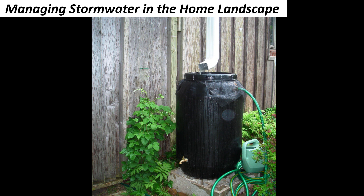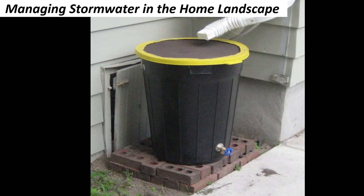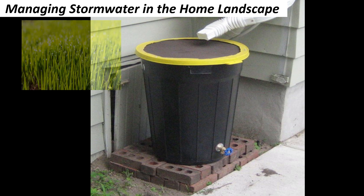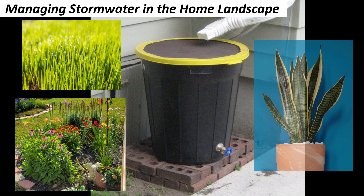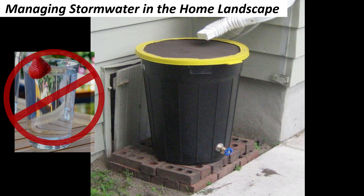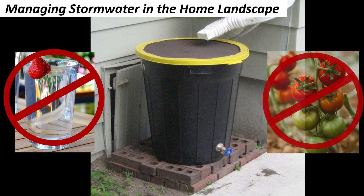You can also manage stormwater by installing rain barrels. Rain barrels are placed at your downspouts to collect rainwater as it flows off your roof, which can then be used to water your lawns, flower gardens, or house plants. The water collected in rain barrels is not potable or drinkable, so it should not be used to irrigate or wash edible plants.